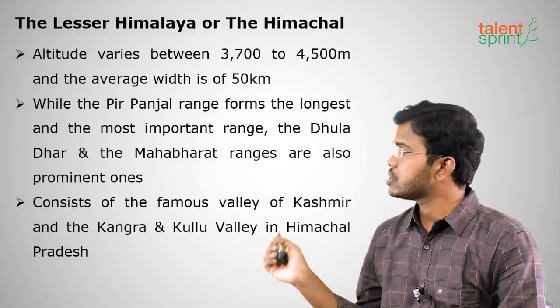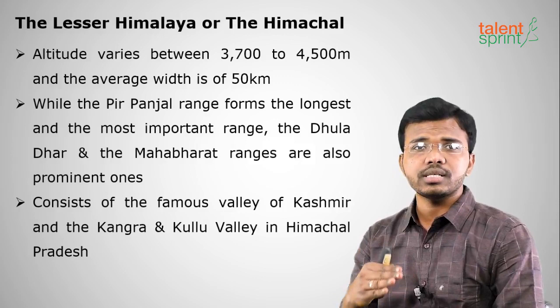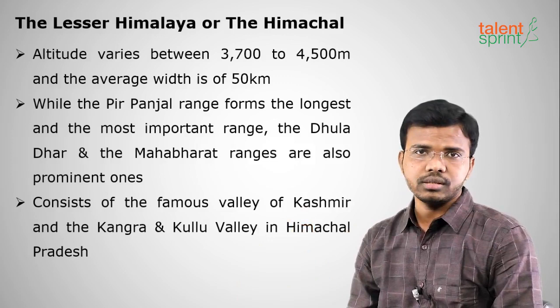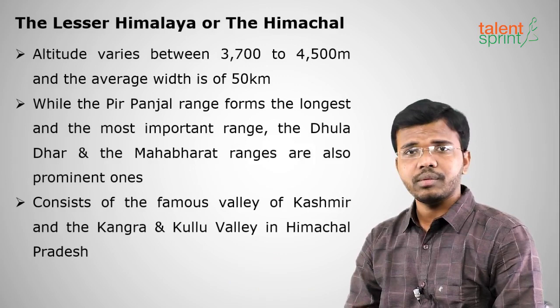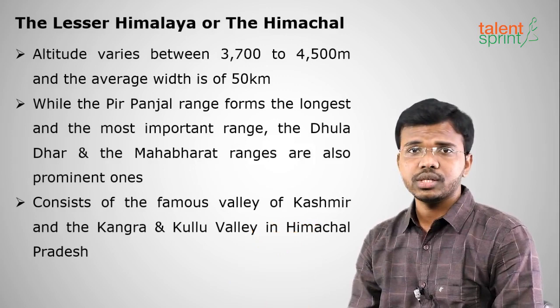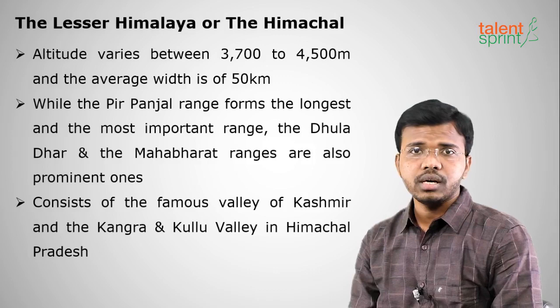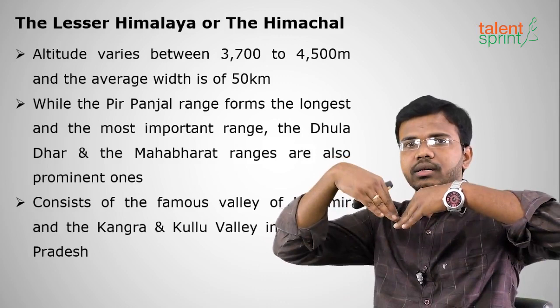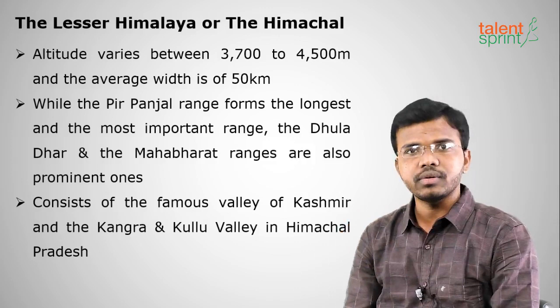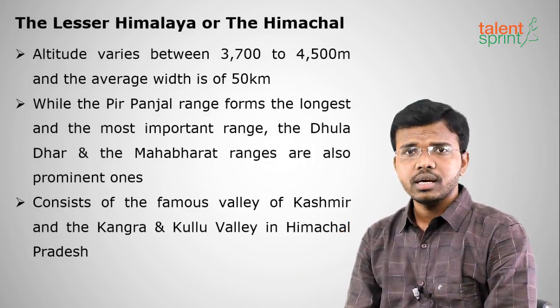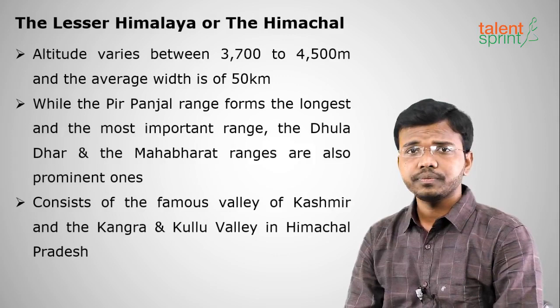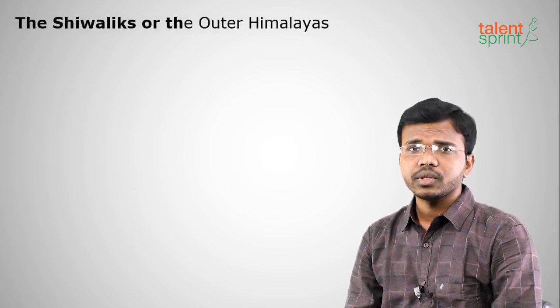The Lesser Himalayas or Himachal have an average height ranging from 3700 to 4500 meters and an average width of 50 kilometers. Important ranges here include the Dhauladhar range and the Mahabharata range. Famous valleys in this region include Kullu Valley in Himachal Pradesh and Kangra Valley in Jammu and Kashmir. A valley is a gap between two mountains through which rivers and air passes flow — a beautiful scenic area.